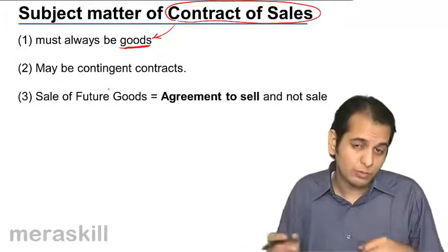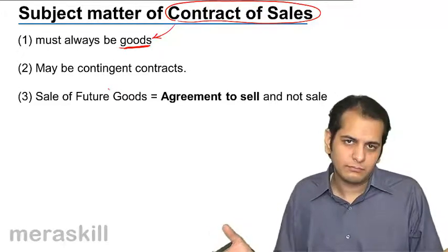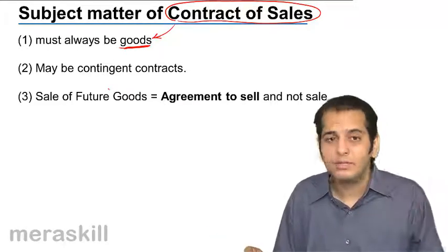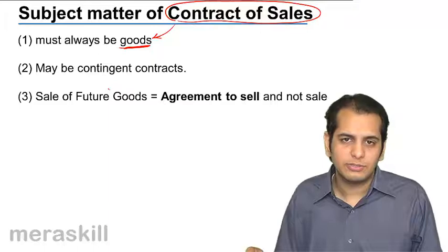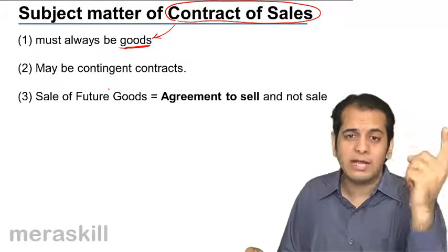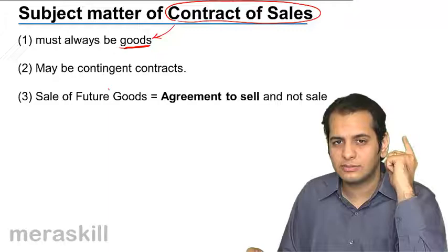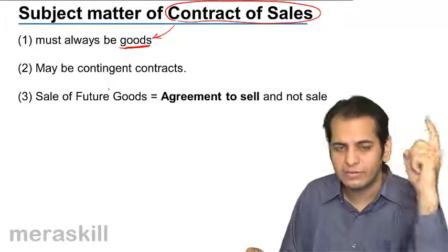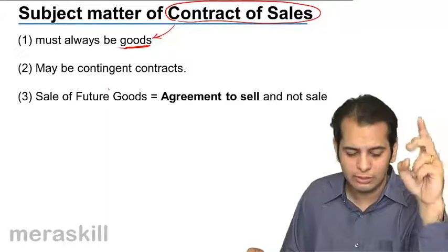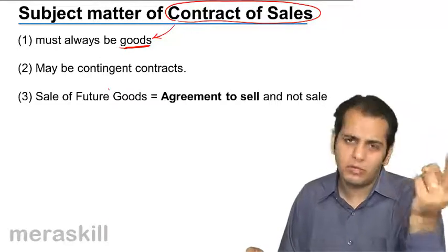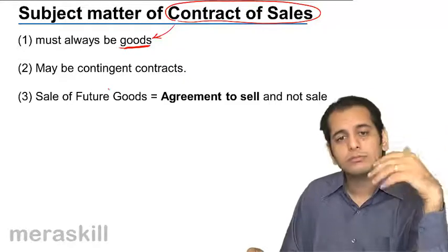So it is quite possible that the subject matter may be contingent. To summarize: first, the subject matter always has to be goods. Second, goods may be contingent. Third, goods may be future also.